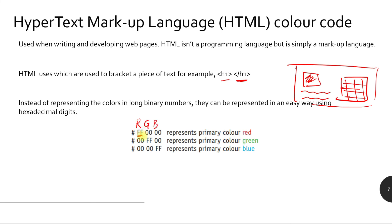The first group FF represents red, the second group represents green, and the third represents blue. When green and blue have the value 00, and red is FF, the result is pure red (#FF0000). Green is represented as #00FF00, and blue as #0000FF. Don't forget to start the representation with a hash sign. Representing these colors in binary would take a much longer space compared to these short hexadecimal values.